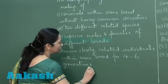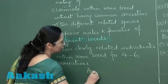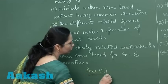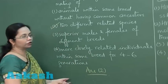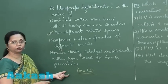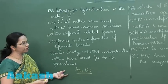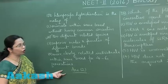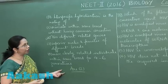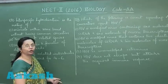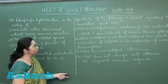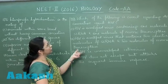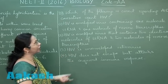The correct answer for question 172 is option number two. The best example of inter-specific hybridization is the mule, which is a product of a horse and a donkey. Now let's move to question 173.